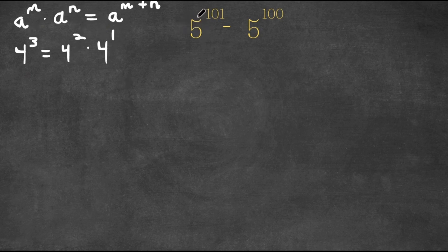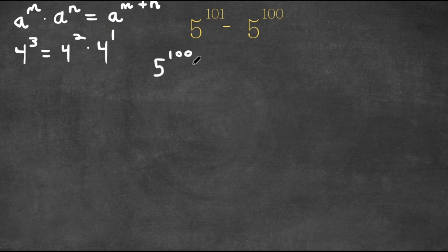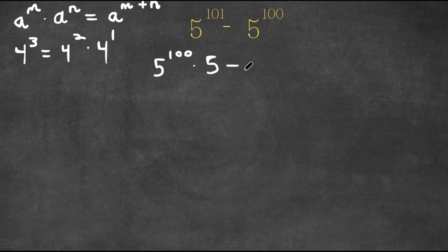So now, what I'm going to do to 5 to the power of 101 is I'm going to rewrite it as 5 to the power of 100 times 5. And 5 is the same thing as 5 to the power of 1, and 100 plus 1 is 101. So now we are going to subtract this with 5 to the power of 100.